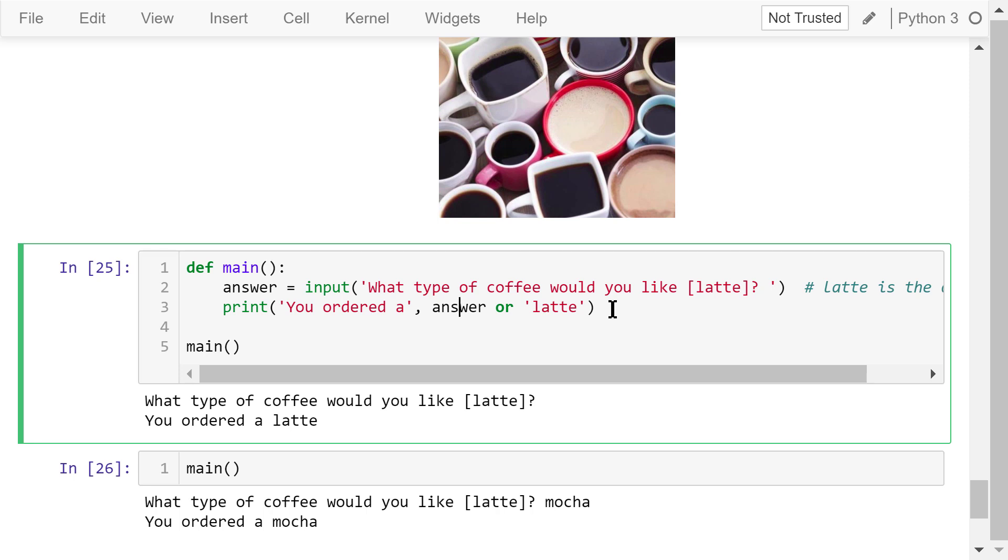If the user types in some name like mocha, then answer is not empty, and the entire expression will just return the answer and ignore latte. The last line is a function call.